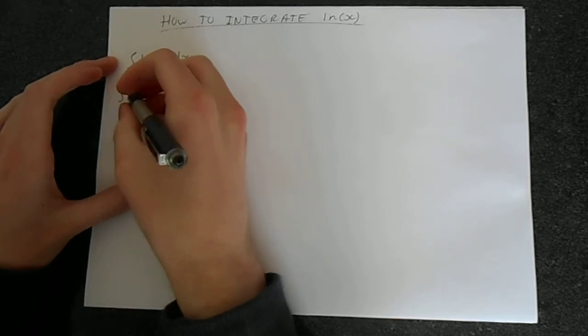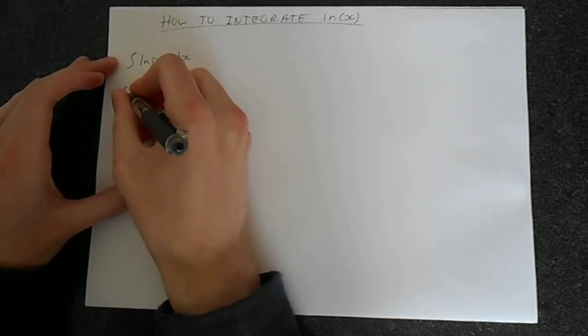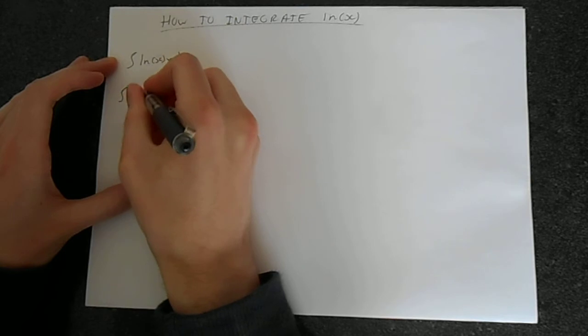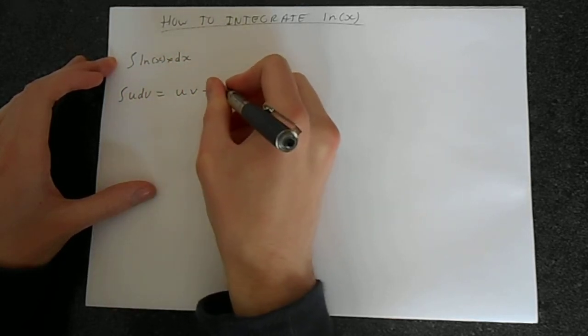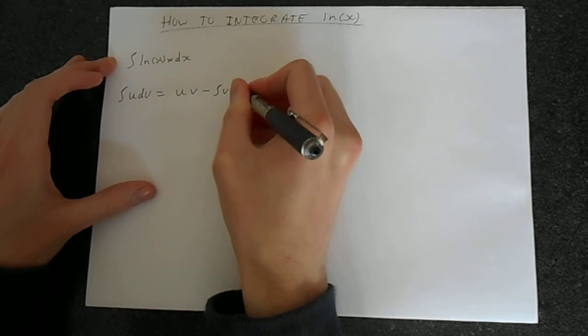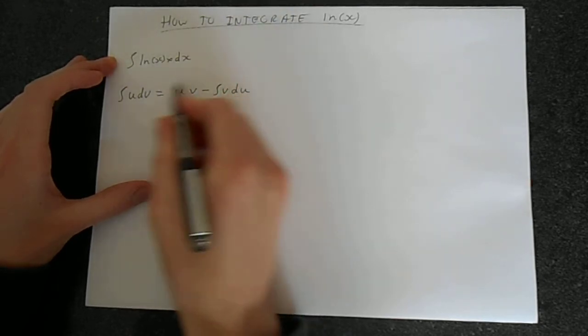Integration by parts, the formula is the integral of u dv equals u v minus the integral of v du. And we work all these things out.